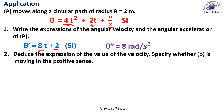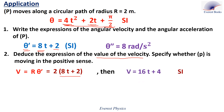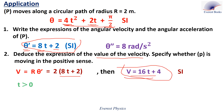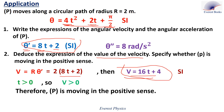Number two: deduce the expression of the value of the velocity and specify whether P is moving in the positive sense. To find the expression of the velocity, we use the relation v = r·theta prime. With r = 2 meters and theta prime = 8t + 2, then v equals 16t + 4 in SI units. To specify whether P is moving in the positive sense: since t is positive, v is positive at any instant. Therefore, P is moving in the positive sense. Similarly, if we use theta prime, since t is positive, theta prime is positive, and therefore the particle is moving in the positive sense.